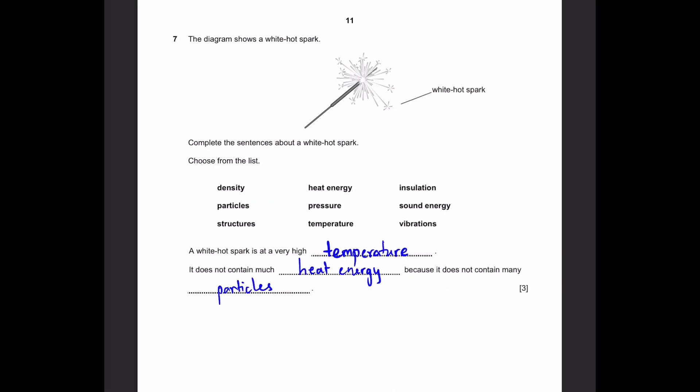Now you can go to question 7. The diagram shows a white hot spark. Complete the sentences, choose from the list. A white hot spark is at a very high temperature, which means average kinetic energy of the particles. But it does not contain much heat energy, which is the total energy of the particles, the total kinetic energy of the particles, because it does not contain many particles. Because if there are very few particles, the total will be very less. So that'll be the answer: temperature, heat energy, particles.